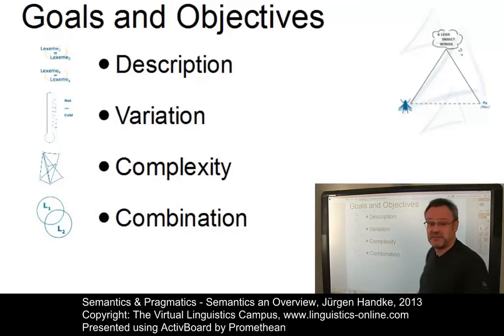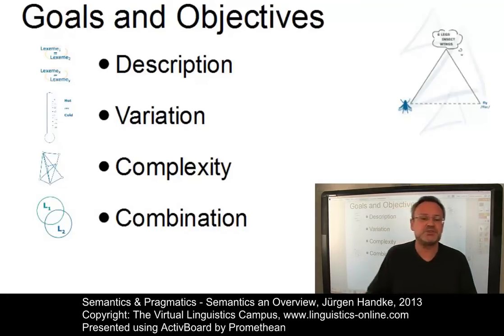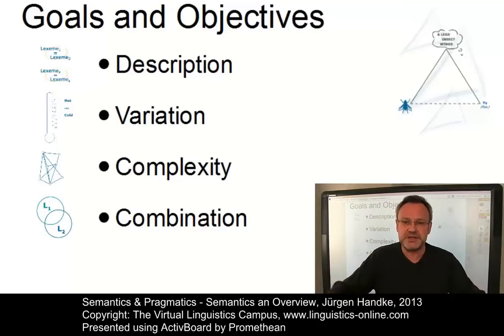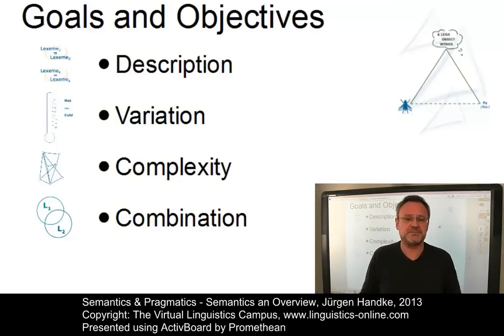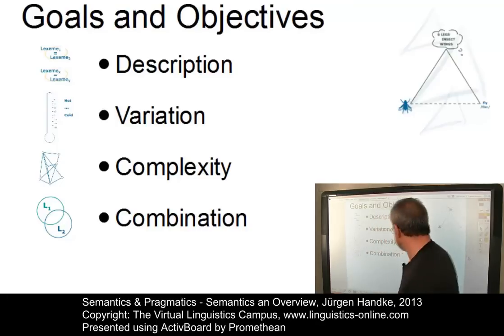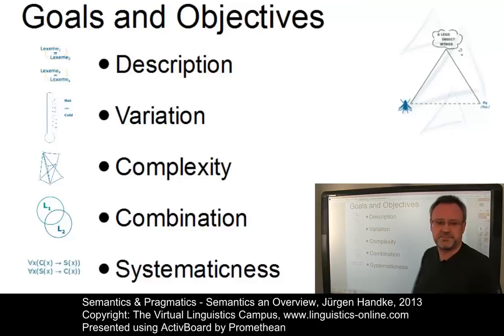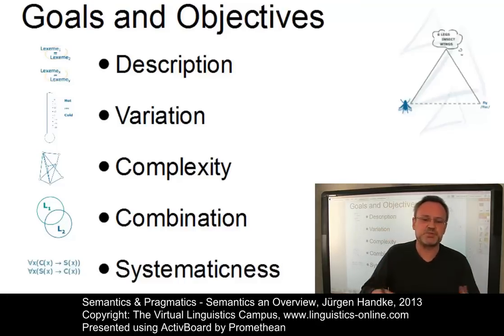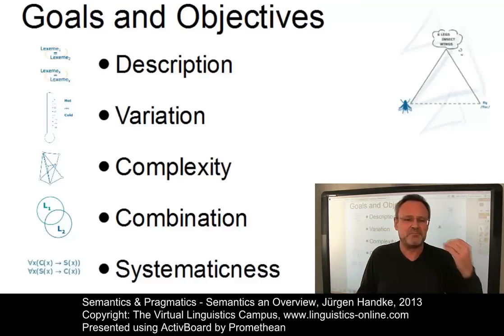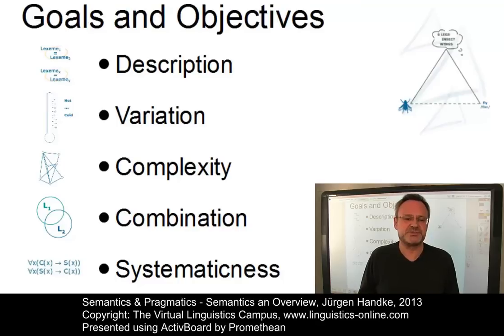What happens if simple meanings combine into compounds, phrases, sentences, and beyond? To answer this question is another major goal of semantics. All this has to be highly systematic, because semanticists want to describe meaning in a maximally economic way. Thus, the use of mathematical formalisms as descriptive devices is very common within semantics.